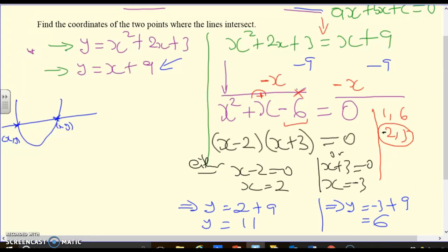So, your two points of intersection when x is 2 y is 11 when x is negative 3 y is 6 because it says find the coordinate so we would now need to put them into coordinate format.